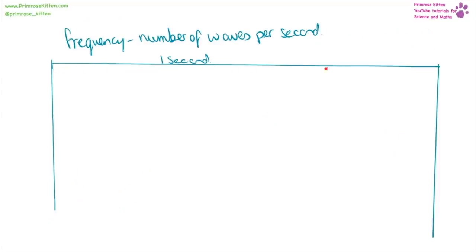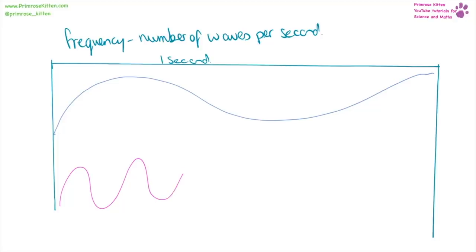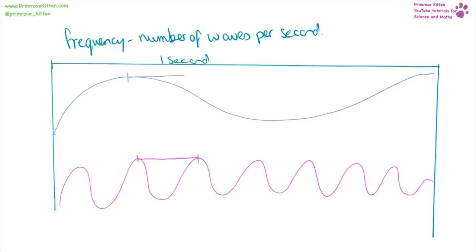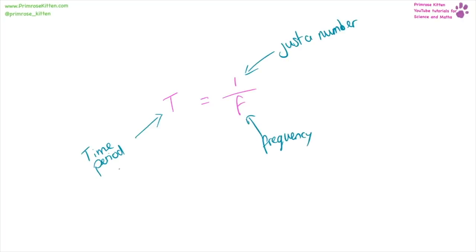If we look at one second in time, something with a low frequency will have few peaks in one second. Something with a high frequency will have lots of peaks within one second. You'll notice that high frequency corresponds to a short wavelength, whereas low frequency corresponds to a long wavelength. To measure the time period, it is one over frequency. Time is measured in seconds and frequency in hertz — capital H, lowercase z. Do not write both letters lowercase or both uppercase, because that is wrong.